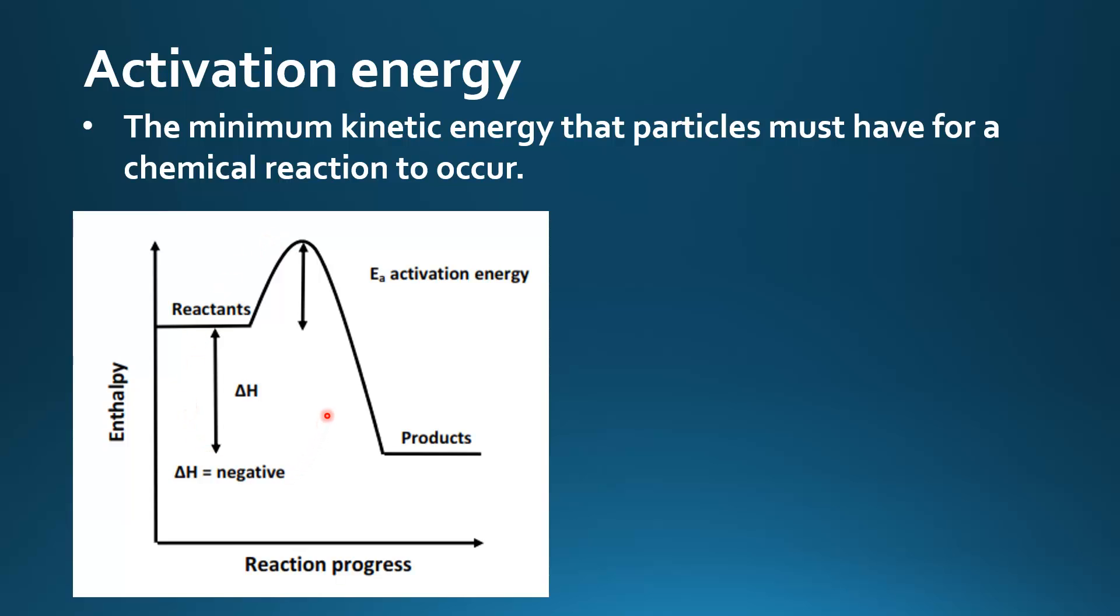This enthalpy level diagram is for an exothermic reaction. The products are at a lower enthalpy than the reactants. Delta H is negative, so it's an exothermic reaction. The activation energy, which is here, is the energy barrier that must be overcome before the reaction can occur.